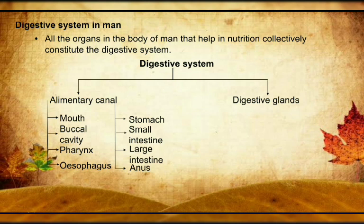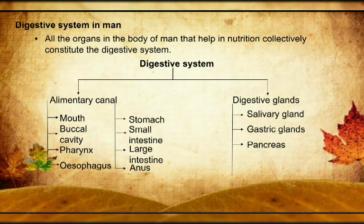The opening of the alimentary canal is the mouth, and the end is the anus. Digestive glands include: number one is the salivary gland — three pairs of salivary glands, meaning six salivary glands in our body. Next is the gastric gland, present in the stomach. Next is the pancreas — a leaf-like structure present just below the stomach, which releases pancreatic juice containing different enzymes. Next is the liver — the largest gland in our body, which secretes bile stored in the gallbladder; bile has no role in digestion. Next is the intestinal gland.